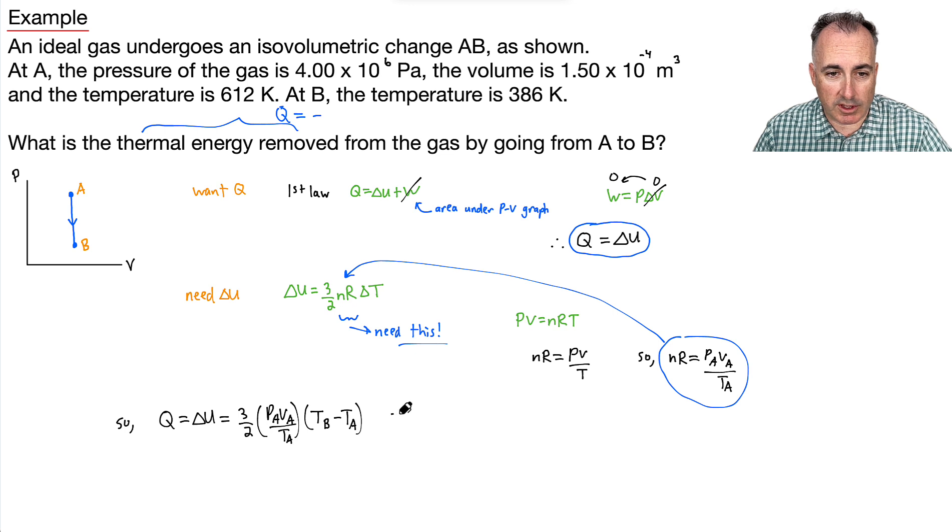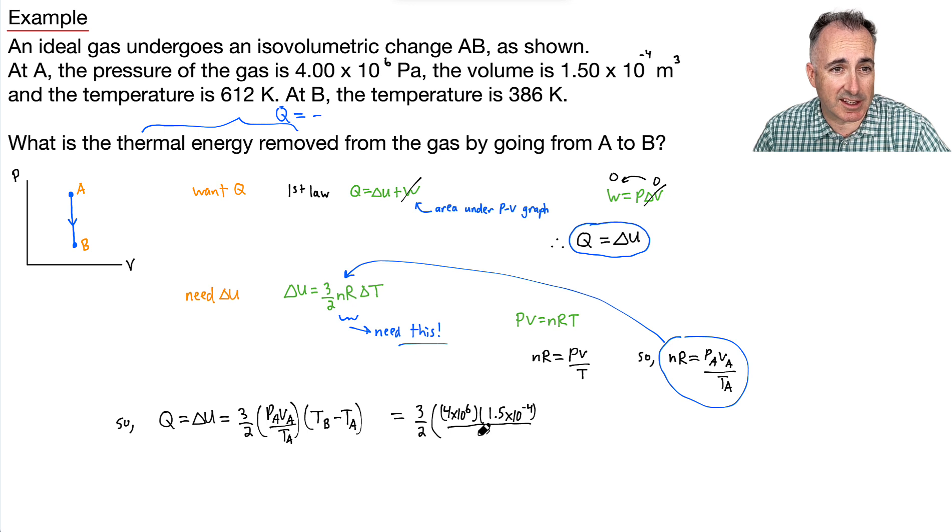Well, then I just have to put in all the numbers. I have 3 halves times, the pressure at A is 4 times 10^6. That's times the volume at A, which is 1.5 times 10^-4. Divide that whole thing by the temperature at A, which is 612 Kelvin. And that whole thing is times, temperature at B is 386, all that minus 612.